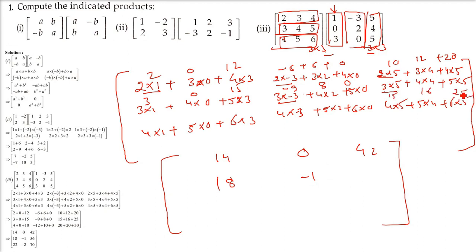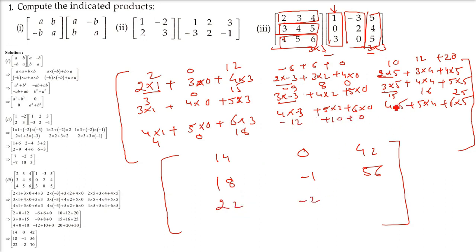What do you get? This is going to be 56. This is 4, 0, 18 — that is 22. Minus 12, 10 and 0 — that is going to be minus 2. Then 20, then 56 or 30 which will be 70. This is the matrix multiplication of all these examples.